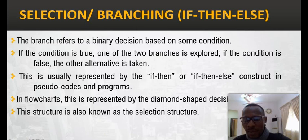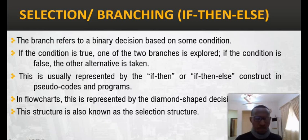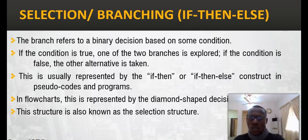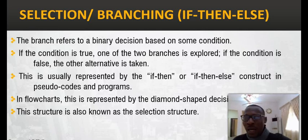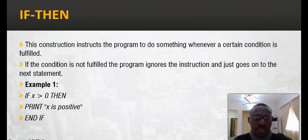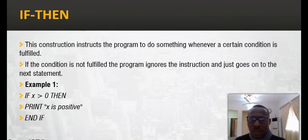If you remember our flowchart symbols, we use the diamond shape to represent decision making. A condition can either be true or false, yes or no — that is what we call the selection structure. Now, the if-then statement does something whenever a condition is fulfilled. If the condition is not fulfilled, it ignores the instruction. It is only when a condition is met that the program will carry out an operation.